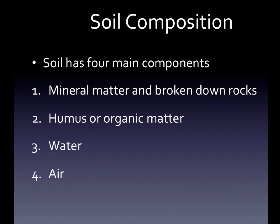Soil composition has four main components. First, mineral matter and broken-down rocks. Second, humus and organic matter — humus is another word you need to become familiar with. Our organic matter means matter from something that was living. A lot of people confuse organic with fresh, because in the grocery store, if you buy organic tomatoes, they're farm-grown natural tomatoes.